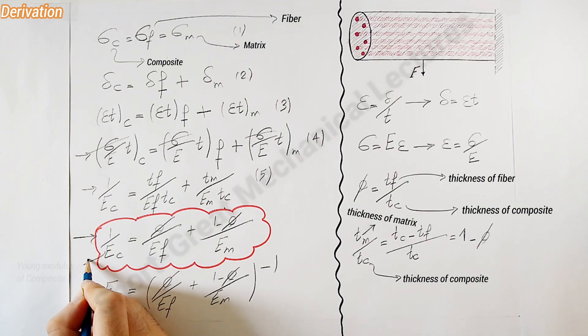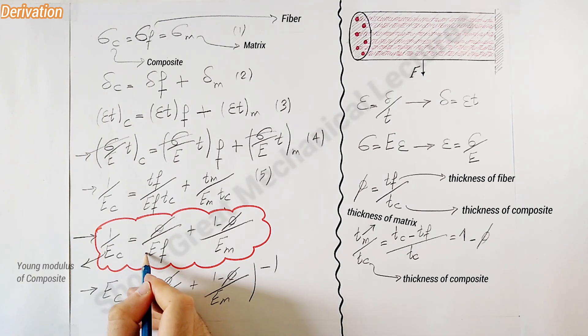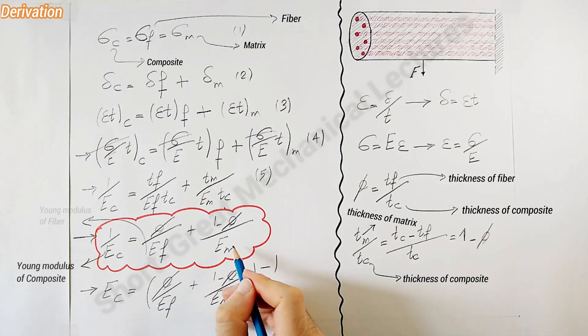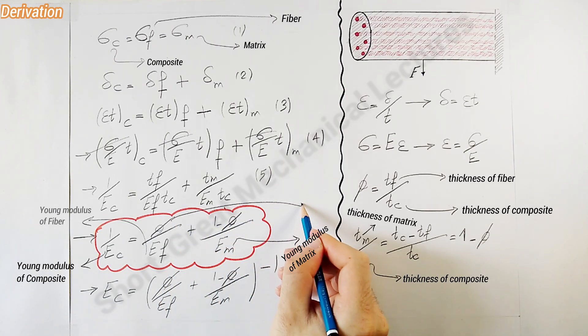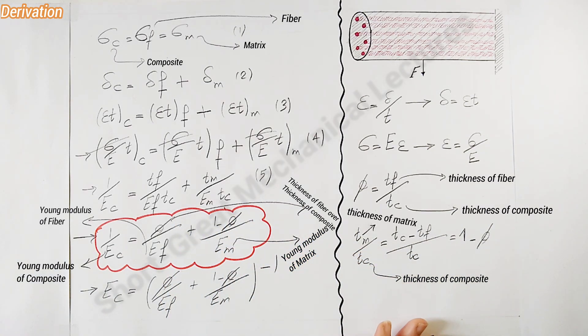This is the Young's modulus of the composite, Young's modulus of fiber, Young's modulus of the matrix, and phi is the ratio of the thickness of fiber over the thickness of the composite.